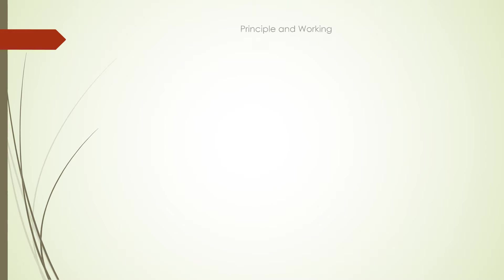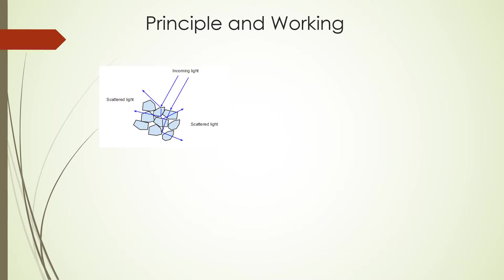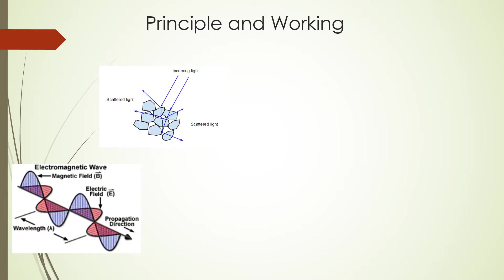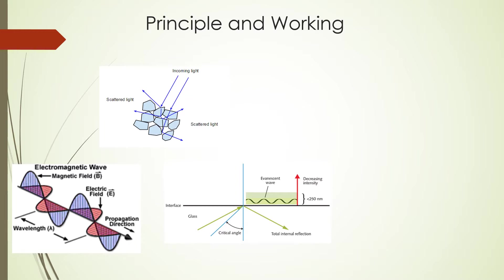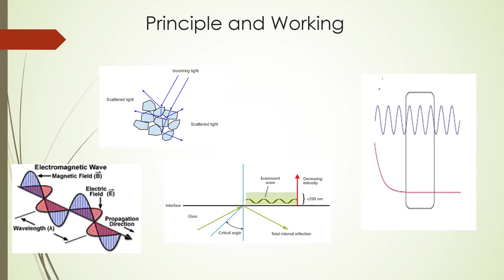Now let us see the principle and working of the superlens. The light emitted or scattered from an object includes not only propagating waves but also evanescent waves which carry the subwavelength detail of the object. The evanescent waves decay exponentially in any medium with a positive refractive index, so they cannot be collected at the image plane by a conventional lens, resulting in a diffraction-limited image.